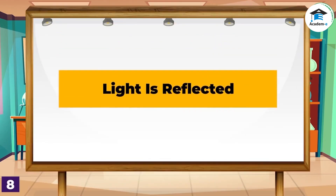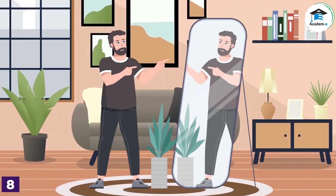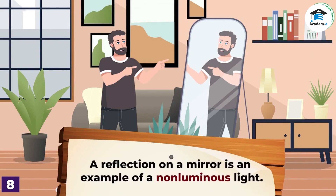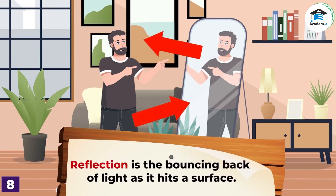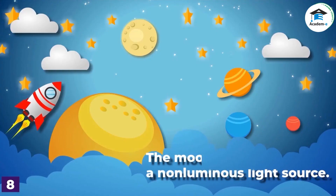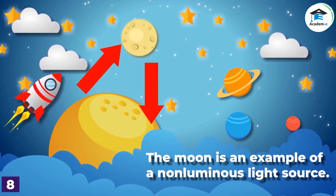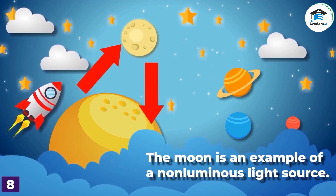Light is reflected. Is it possible to see an object behind you? You can use a mirror — a mirror reflects light. The reflected light on a mirror helps you see yourself and the objects behind you. A reflection on a mirror is an example of non-luminous light. Reflection is the bouncing back of light as it hits a surface. A non-luminous light source does not give light on its own but instead reflects light from a luminous source. The moon is an example — it reflects the light from the sun to make it look like it is shining, and that reflected light helps you see at night.